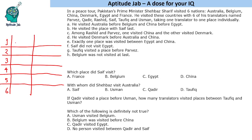He visited the last place with Saif — so Saif is the last translator. He visited Australia before Belgium, and China before Egypt. Among Rashid and Pervez, one visited China and one visited Denmark. He visited Denmark before Australia and China — so Denmark is before Australia, Denmark is before China, Australia is before Belgium, and China is before Egypt.